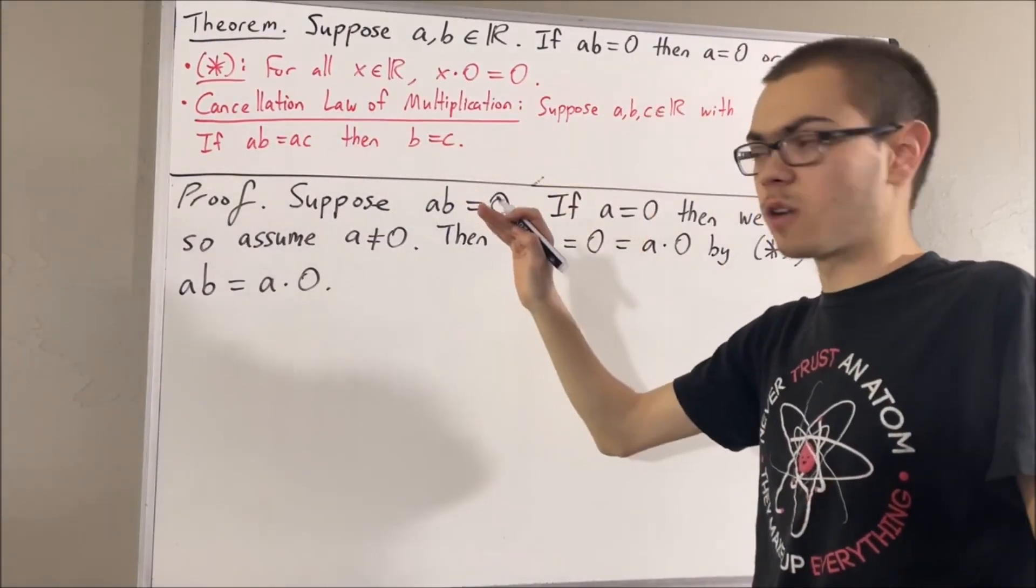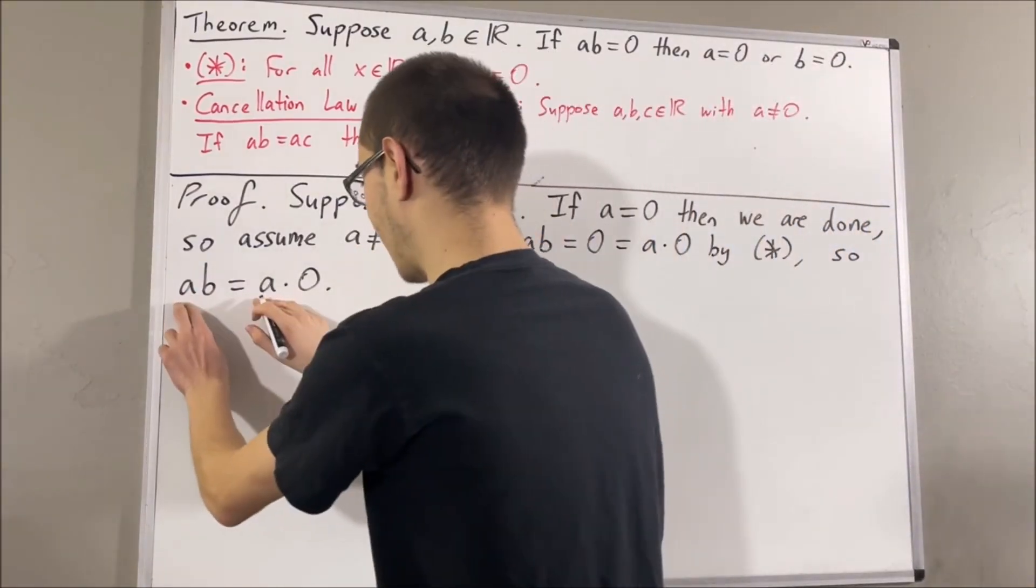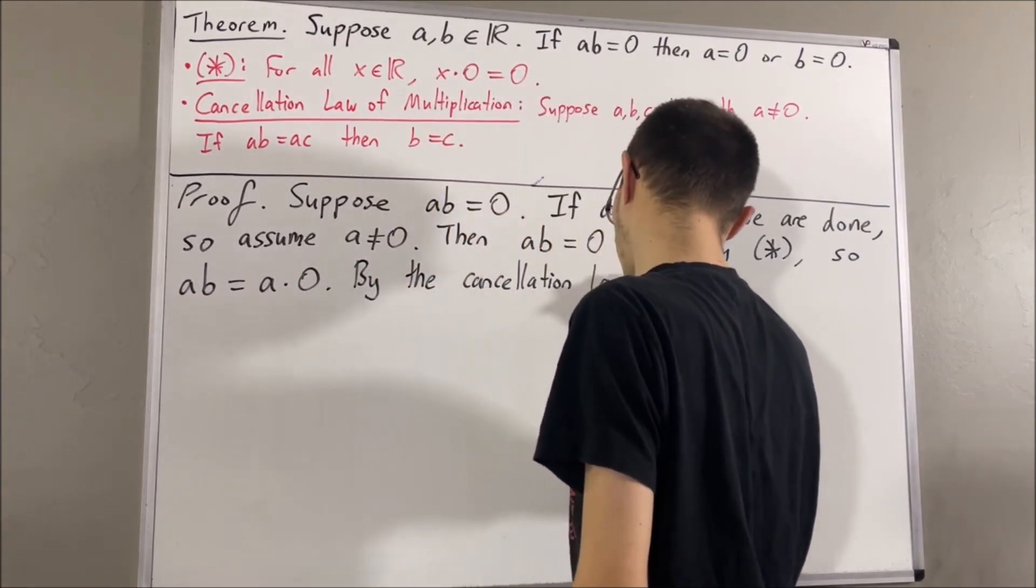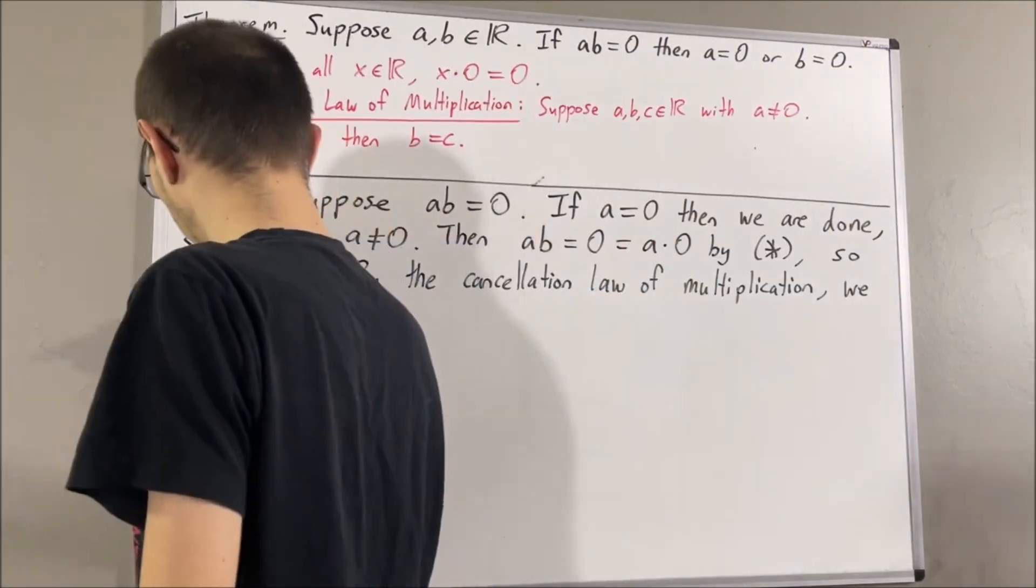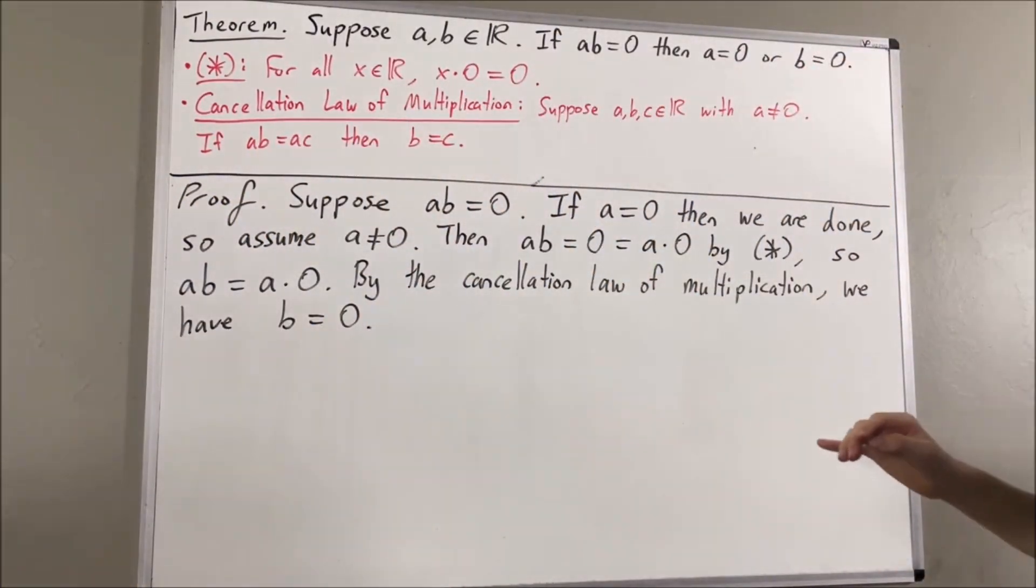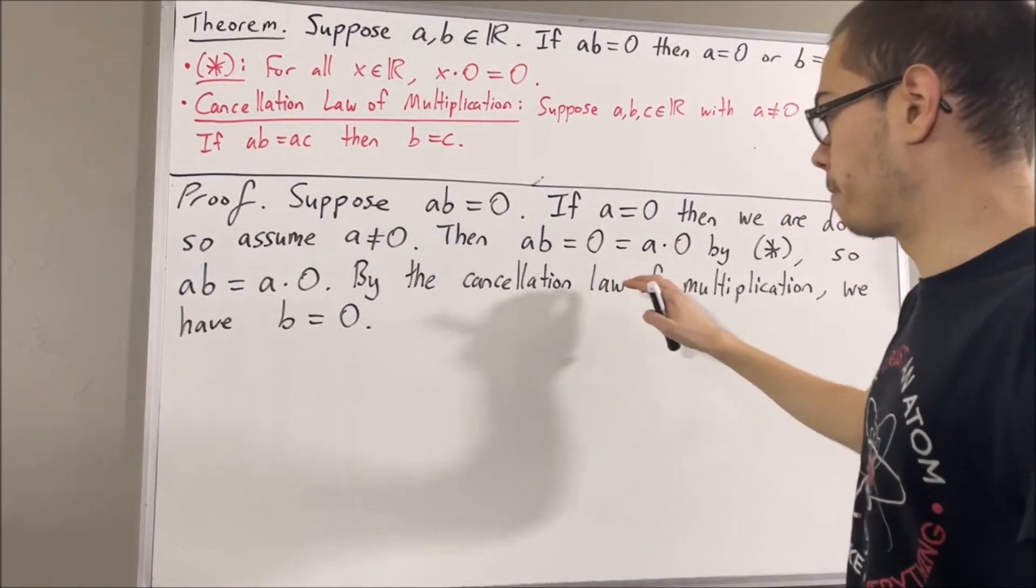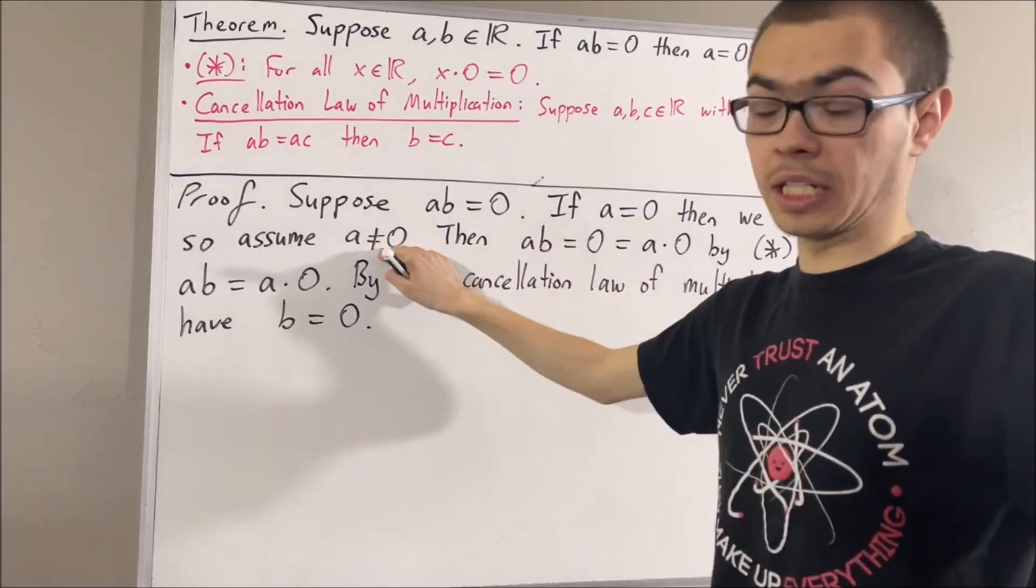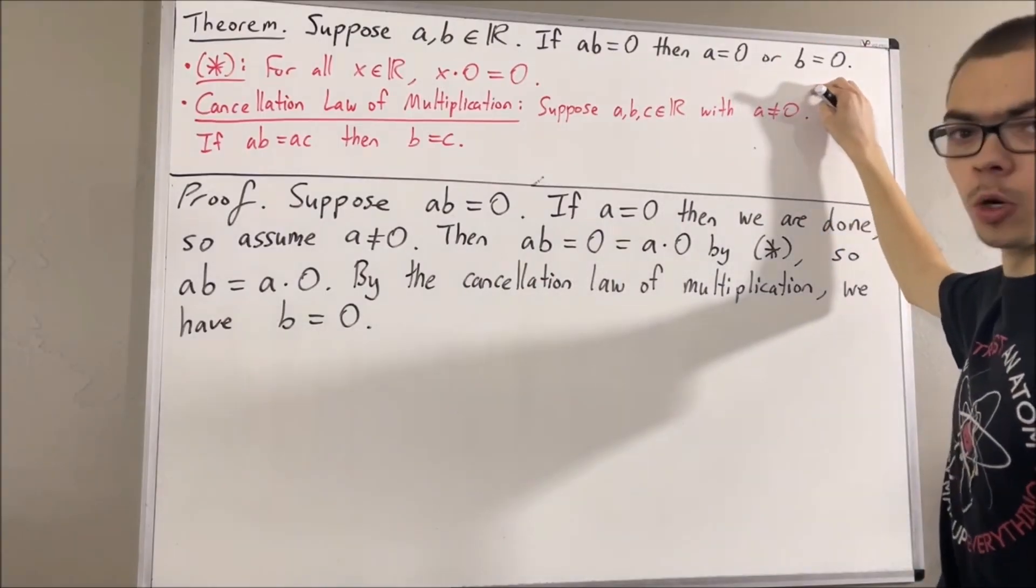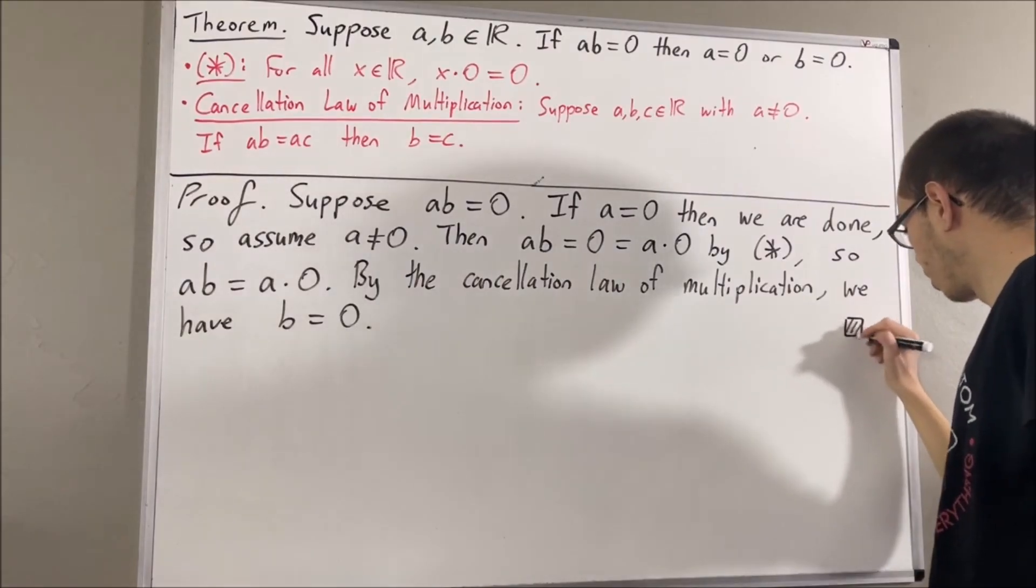By the cancellation law of multiplication, since A is not equal to 0, we can cancel out the A on both sides and we have B is equal to 0. And that is exactly what we wanted to show. So, putting this all together now, we see no matter which case we have, A equals 0 or A is not equal to 0, it follows that at least one of these is true, which is exactly what we wanted. So, this completes the proof.